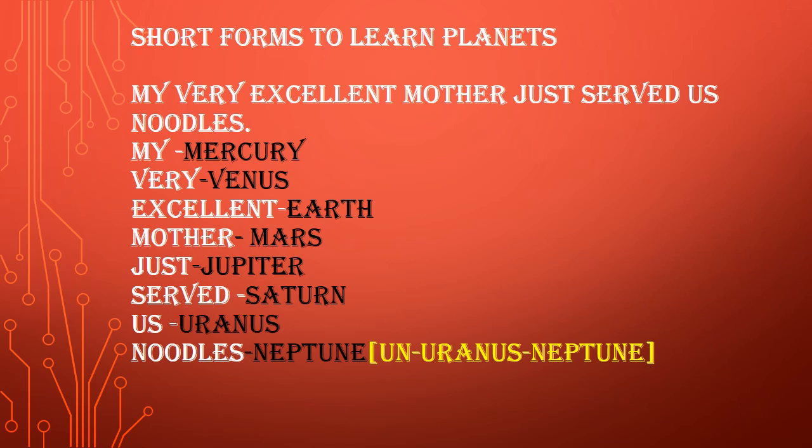We all know that in our solar system there are 8 planets. First of all, I want to clear up a confusion for everyone. Some people say that there are 9 planets — they include Pluto. But Pluto has been excluded because it is a dwarf planet, and in our solar system there are many dwarf planets.